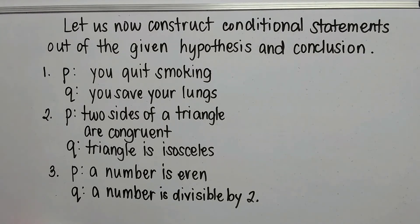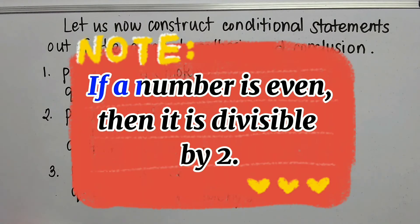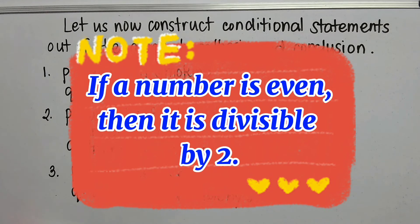Number three. P: a number is even. Q: a number is divisible by two. The if-then statement: if a number is even, then a number is divisible by two.